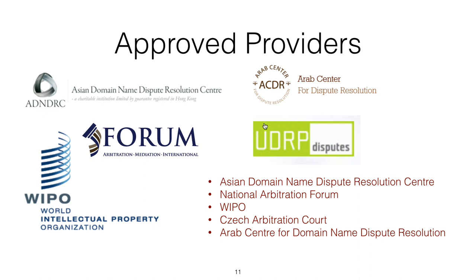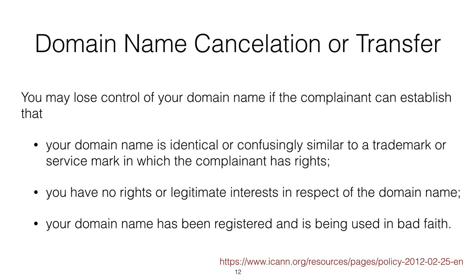The .ie registrar has nominated the WIPO for that purpose, but there are others. The Czech Arbitration Court provides UDRP services for the .eu top-level domain name. The Asian Domain Name Dispute Resolution Center is often used by Asian companies. There is also the National Arbitration Forum in the US, but the WIPO is one of the lead providers for UDRP.